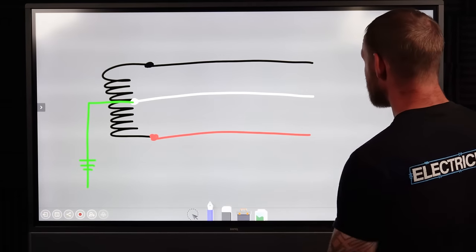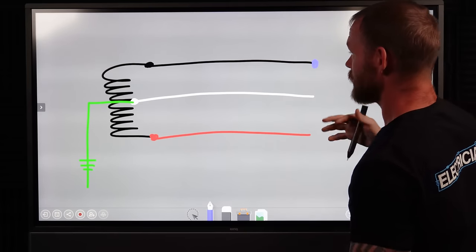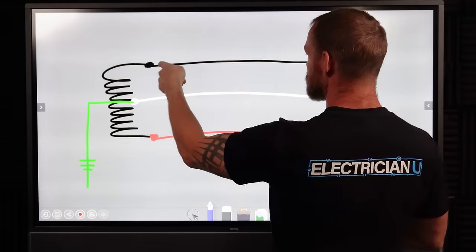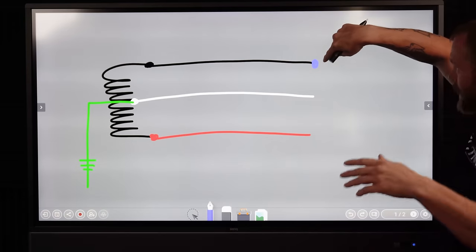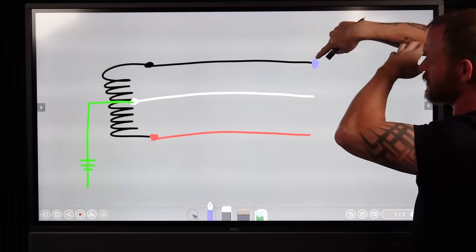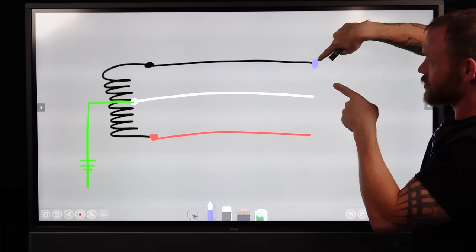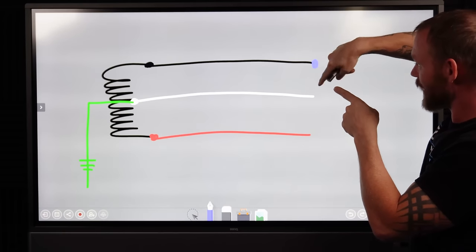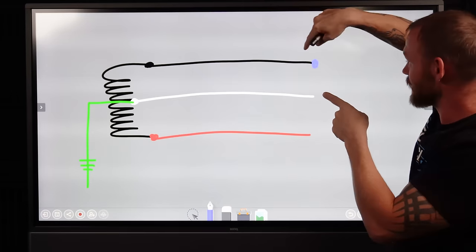But without that, just touching one thing right here, there's no way from our source to get through anything by you just touching. Say your arm's out here. Current's not going to go through you, through your arm and then just jump through the air to get back over here to keep completing a circuit. That's not how it works.